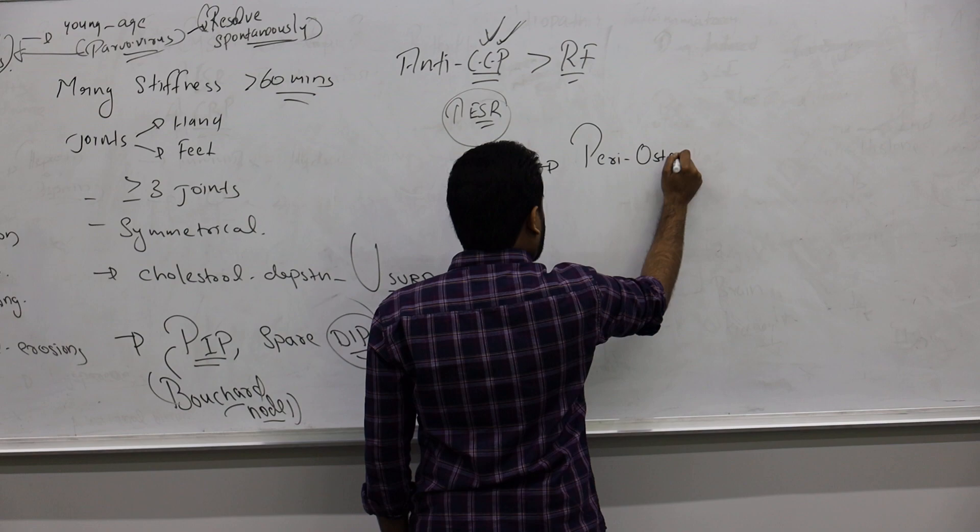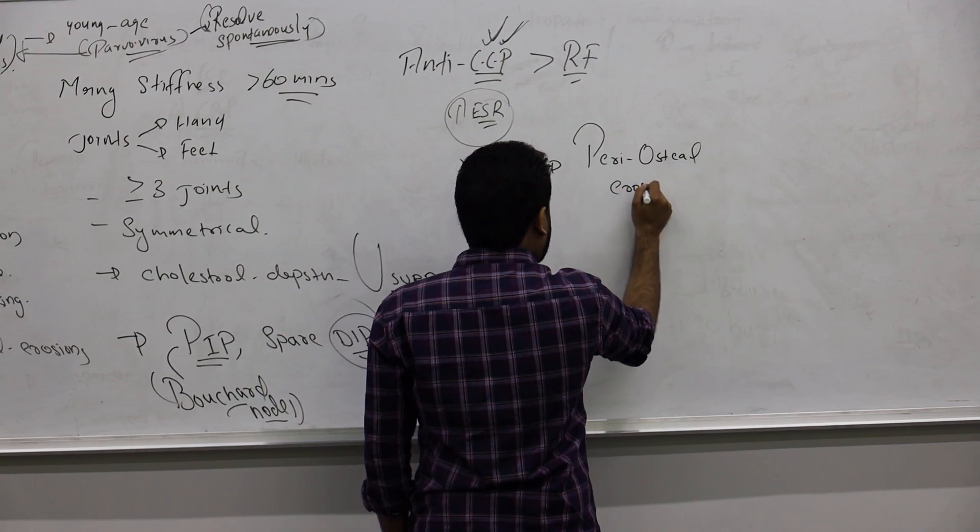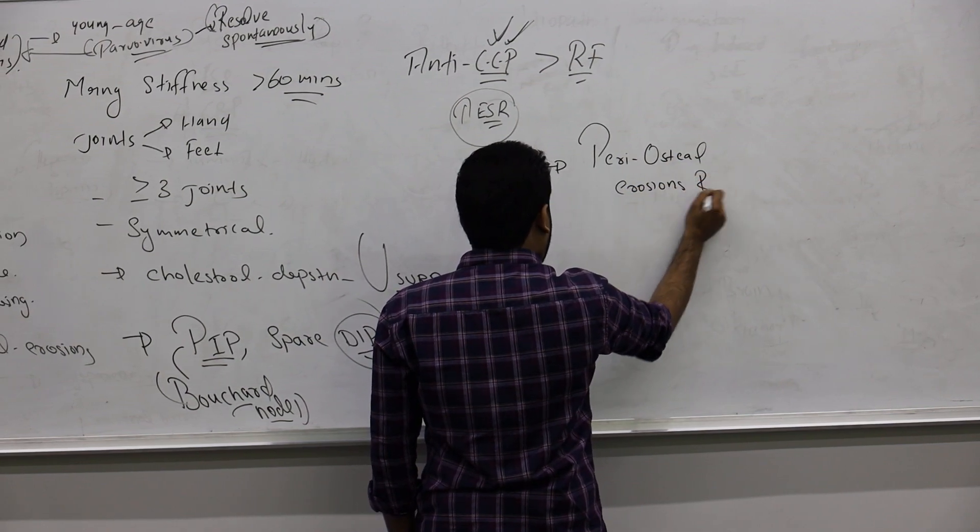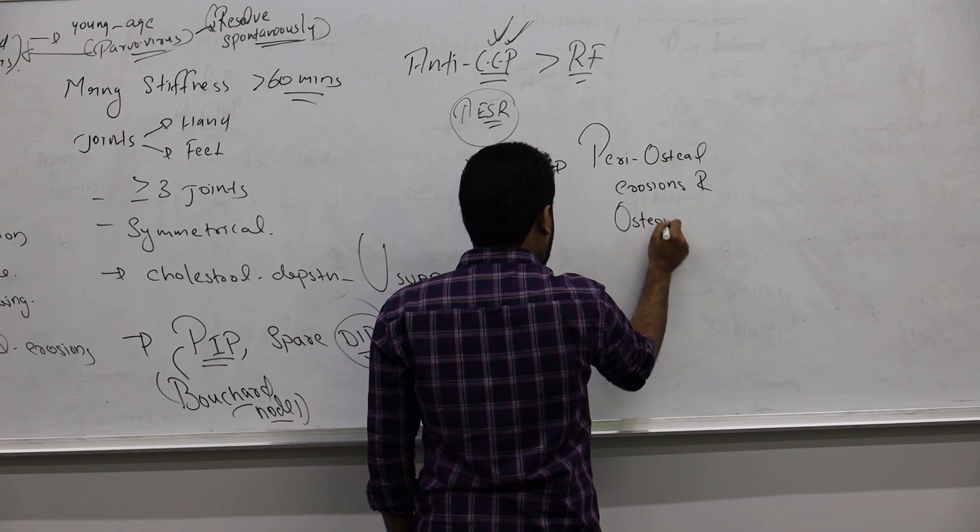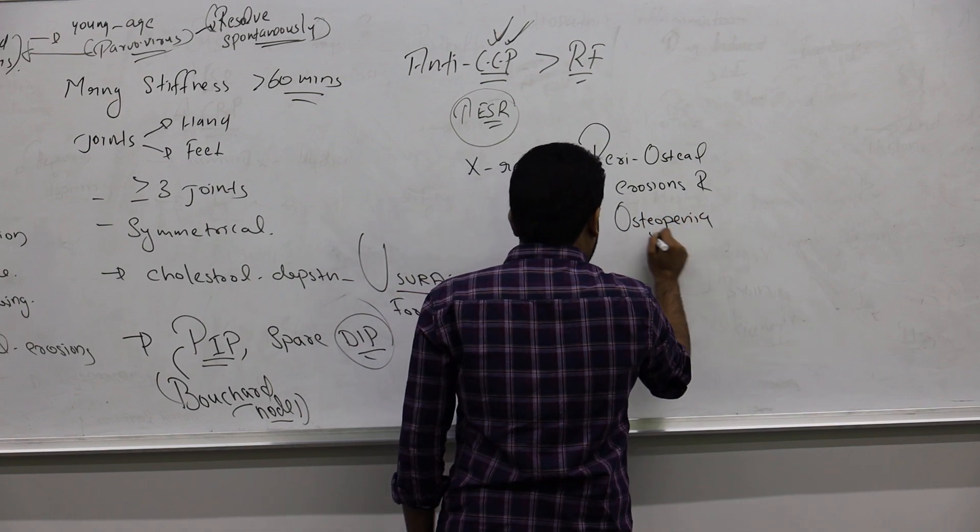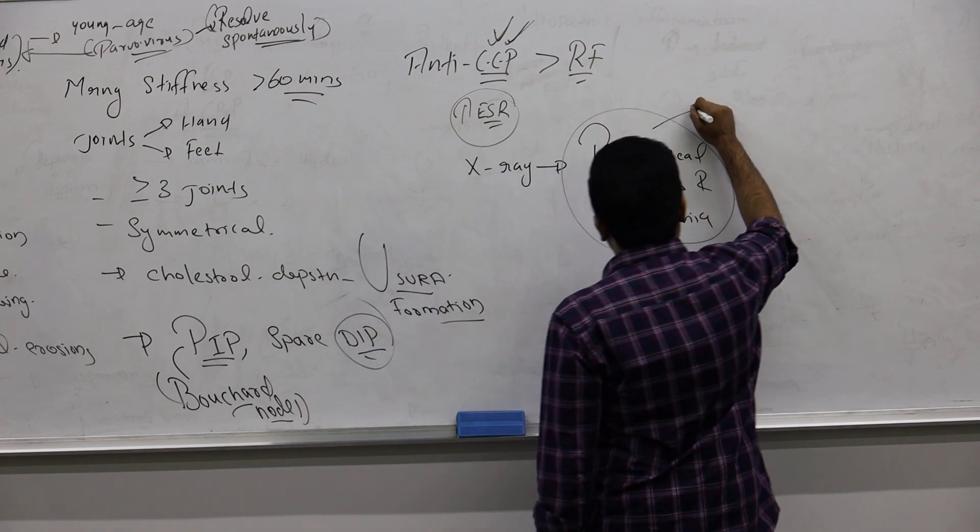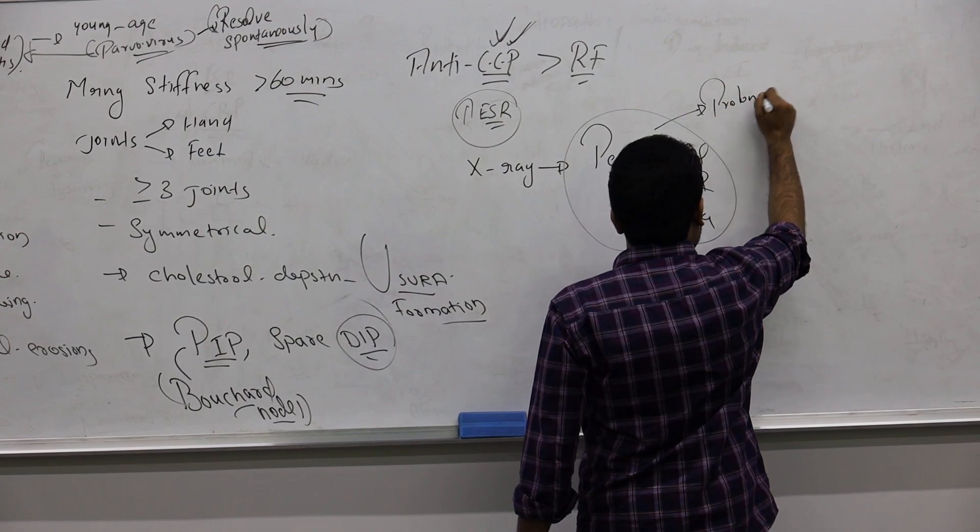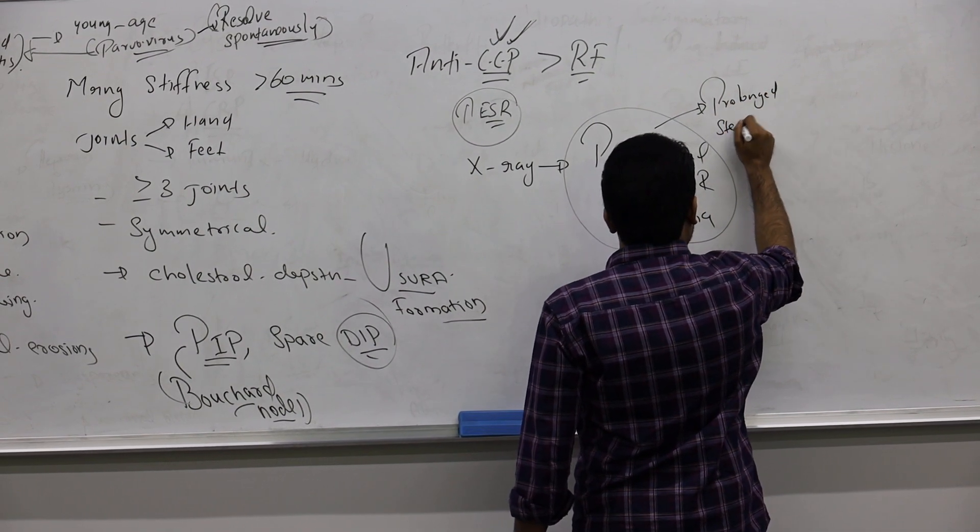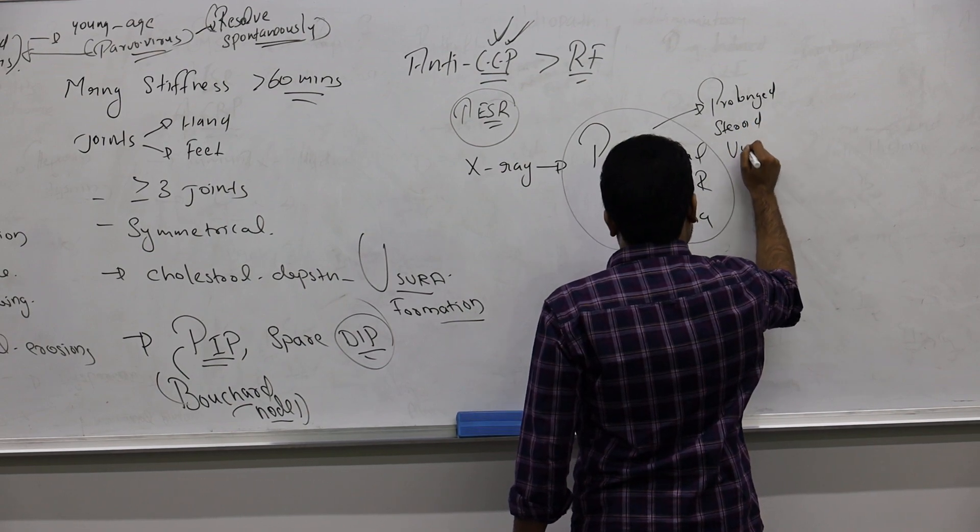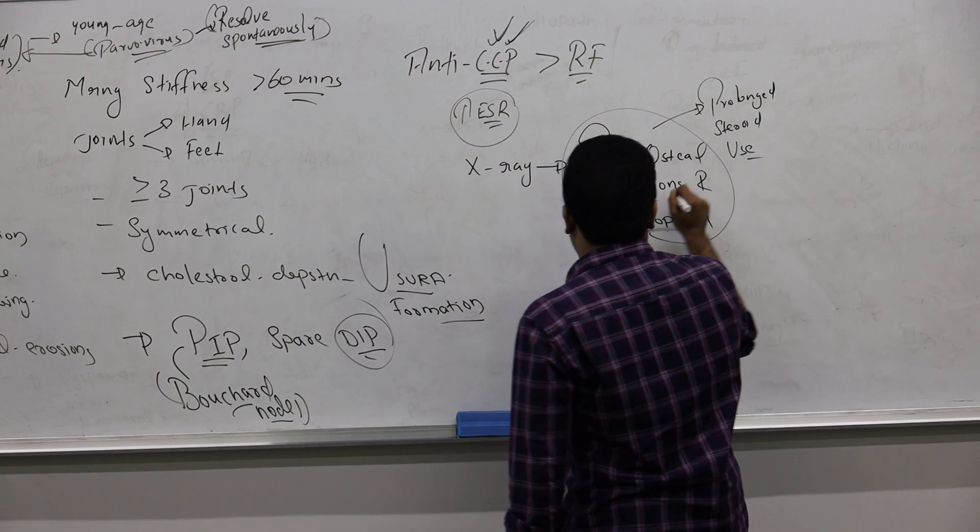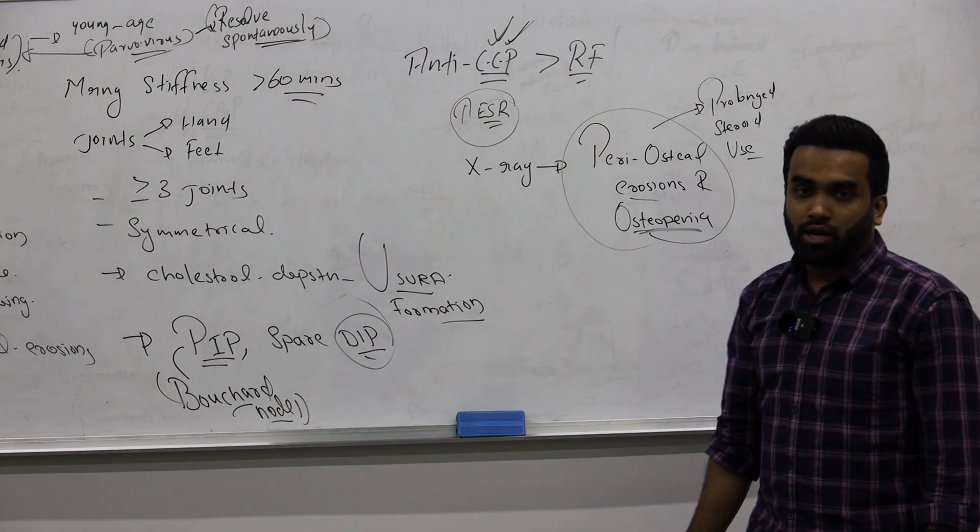Next day you will see periosteal erosions and osteopenia. Why are they having this? Because if someone has rheumatoid, they will use prolonged steroid use, which can cause it. Prolonged steroid use, that's why you're seeing osteopenia—side effect of steroid.